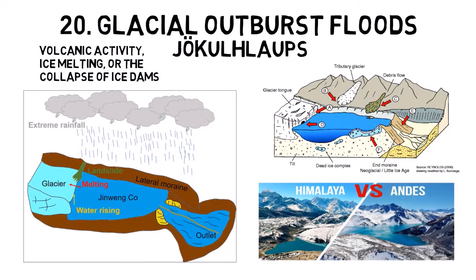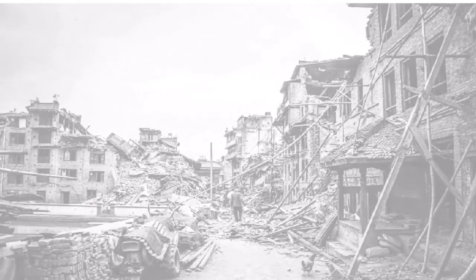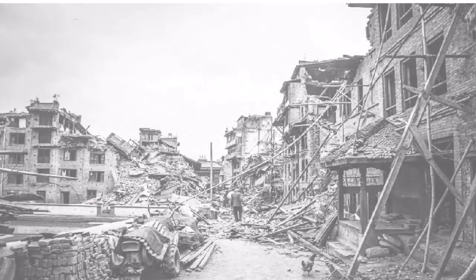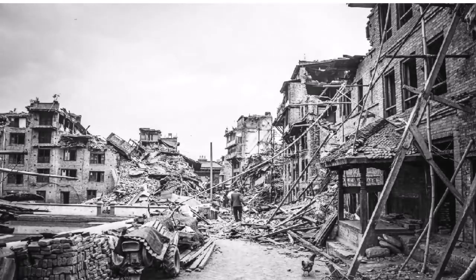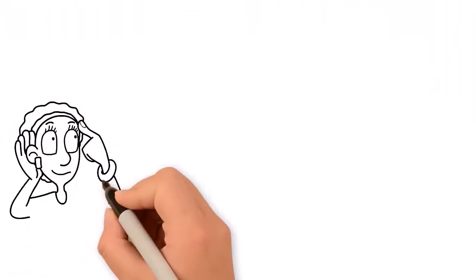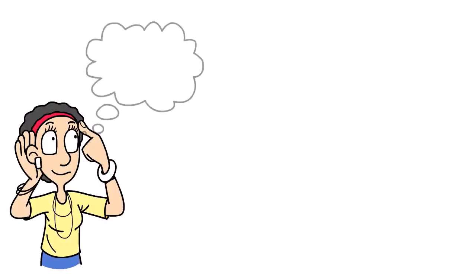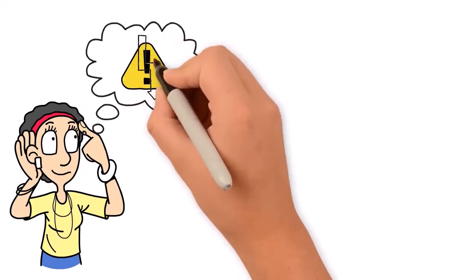Natural disasters are powerful and often unpredictable events that can cause significant damage to life, property, and the environment. Understanding the different types of natural disasters and their causes can help us prepare for and mitigate their impacts.